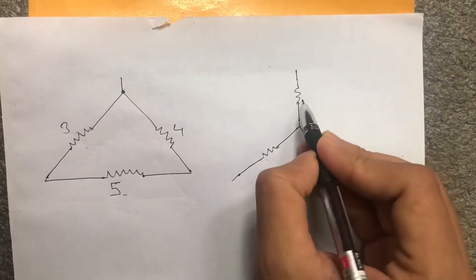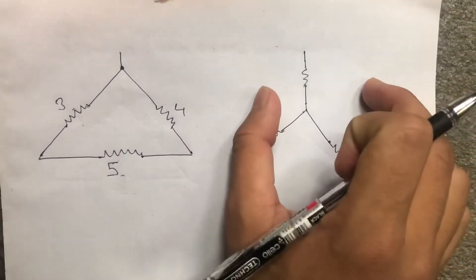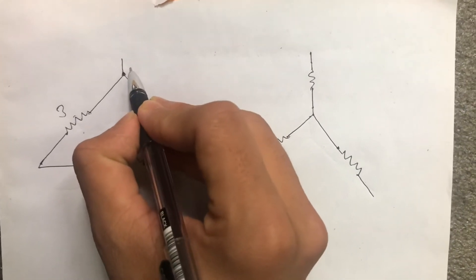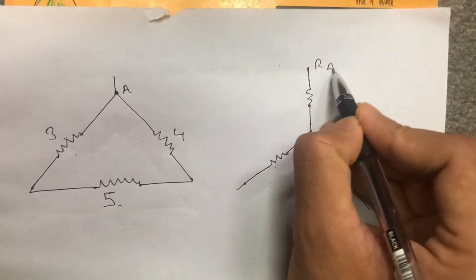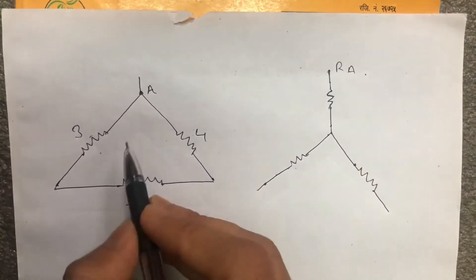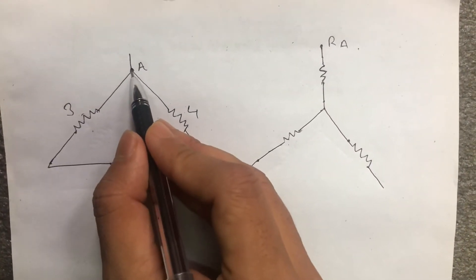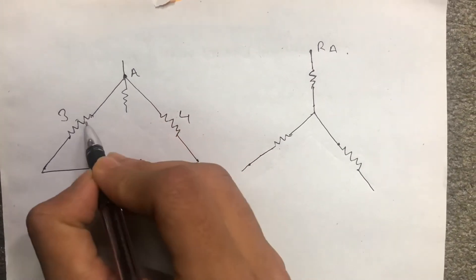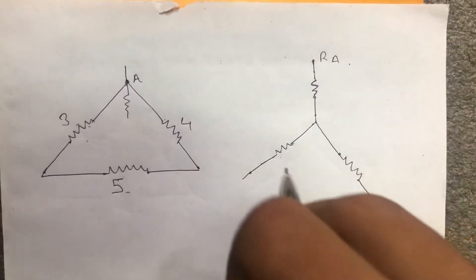The resistance of this corner: multiply the two adjacent resistances upon the total sum. This corner, this resistance, this resistance — multiply upon total sum. This is a corner, this is a corner, this is a corner — total resistance.